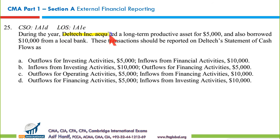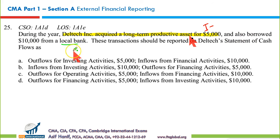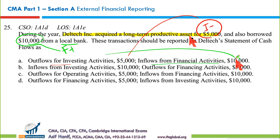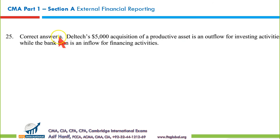Question 24: Dell Tech Inc. acquired a long-term productive asset for $5,000 and borrowed $10,000 from a local bank. Borrowing from a bank is a financing inflow. Acquiring a long-term asset is an investing outflow. So the correct statement is: investing outflow of $5,000 and financing inflow of $10,000 — making A the correct option.